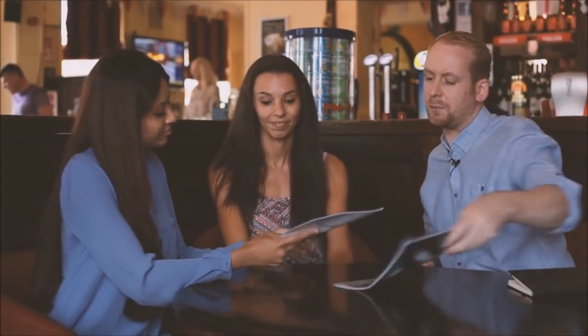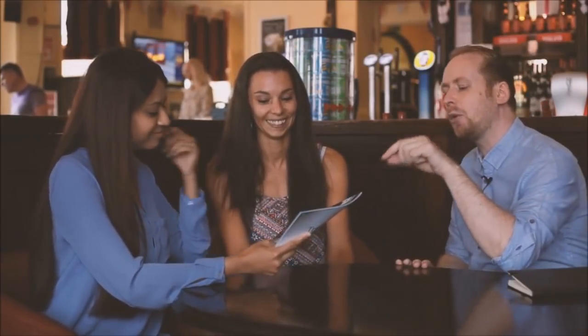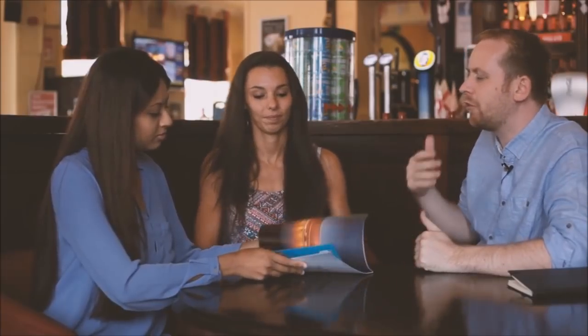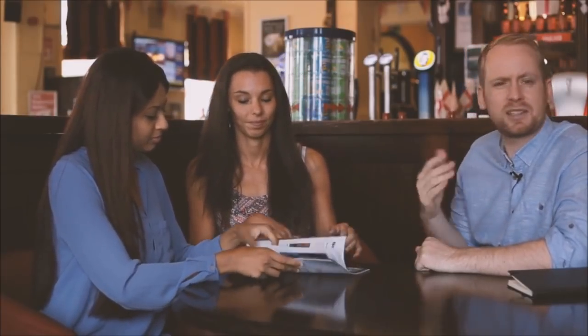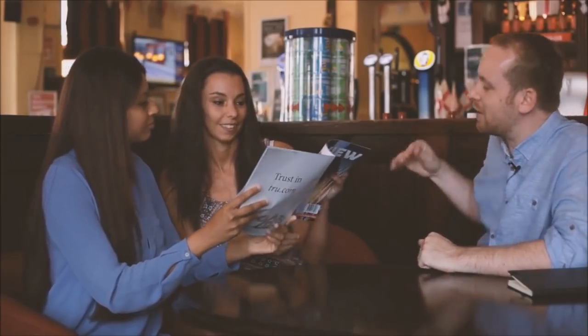Basically what you do is you bring out two different magazines. You have the spectator turn to any page they want. You don't force them to go to any certain page. You have them pick a nice big, complicated, difficult word. They can close the magazine up, put it away, and then from there you walk through the effect. They're actually going to teach you two different methods, and you can pick the one that you like the best. Basically you end up revealing the word and blowing everyone's mind.